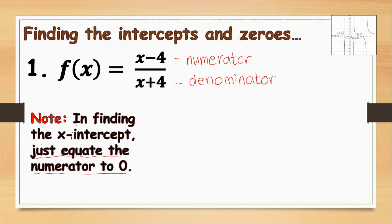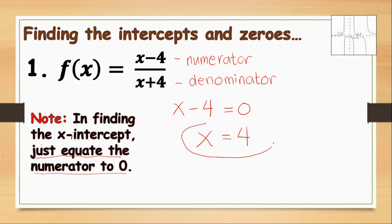We equate the numerator to 0: x minus 4 equals 0, so x equals positive 4. Our x-intercept is at x equals 4, or expressed as a point, that is (4, 0). The zero of our function is equal to positive 4.